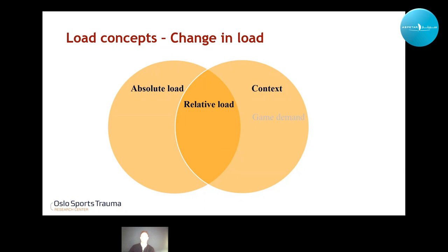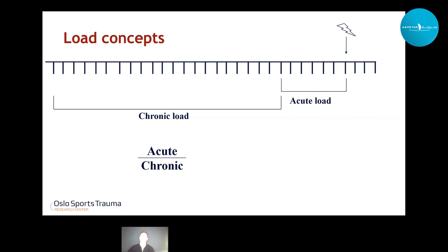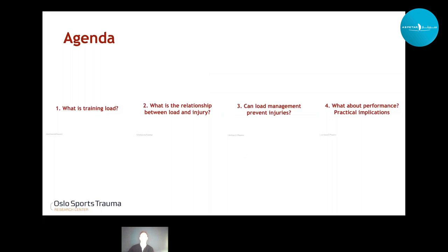The last and probably most important concept of training load is when we apply load history as a context. The relative load then moves from game demand over to load history, and we analyze load as a change in load. We can do this as week-to-week differences in percentages or absolute values — for example, a 100% increase or a 200 meters increase. Or we can do it in a more advanced way: dividing the acute load by the chronic load gives us the now-infamous concept of the acute-chronic workload ratio, or ACWR, which will be highlighted further in the next chapter.